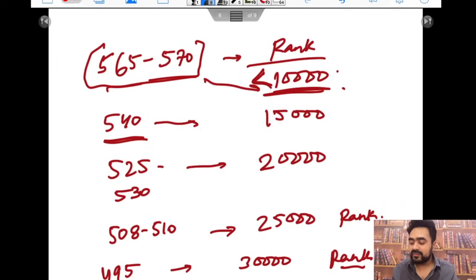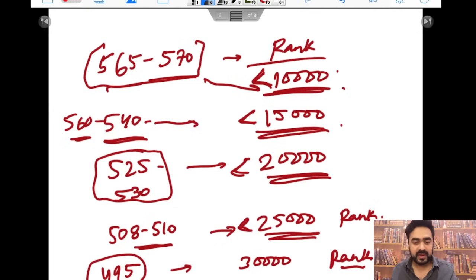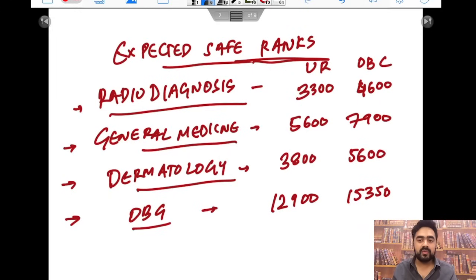508 and 510, you can expect a rank of around under 25,000. Similarly, around 500, if you are getting 490 to 500, then you can expect your rank under 30,000. By that you can expect what are your further plans, what branches you can get. Now you have already calculated how much correct, how much wrong you have done, what is the expected score. I have told you if your marks are like that, you can expect that rank.